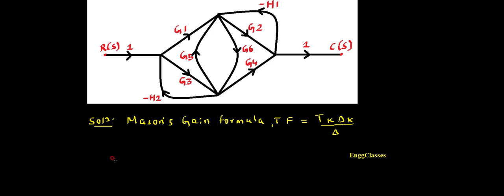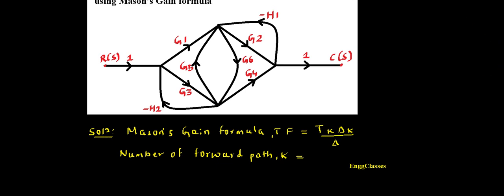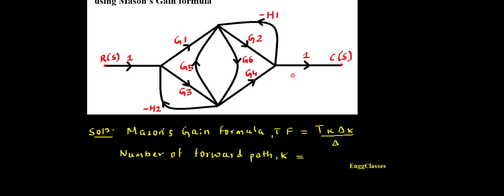First, how many forward paths are there? That's what we need to find. The number of forward paths is indicated using the letter k. Starting from the input: 1 → g1 → g2 → 1, this is the first forward path. Similarly we also have the forward path 1 → g3 → g4 → 1. So from input to output, these are the first two forward paths.